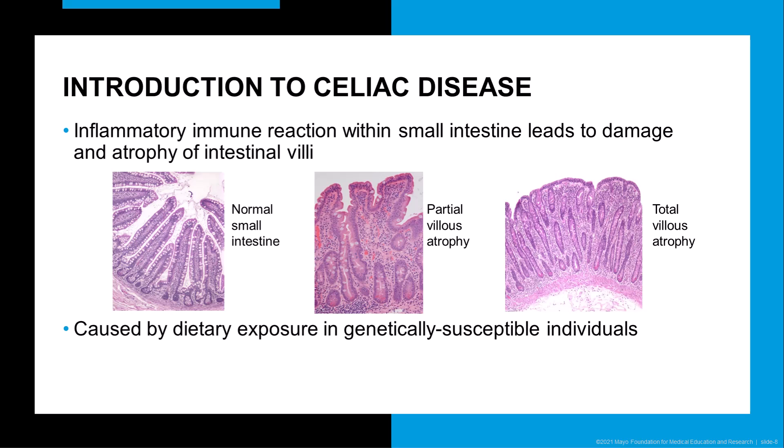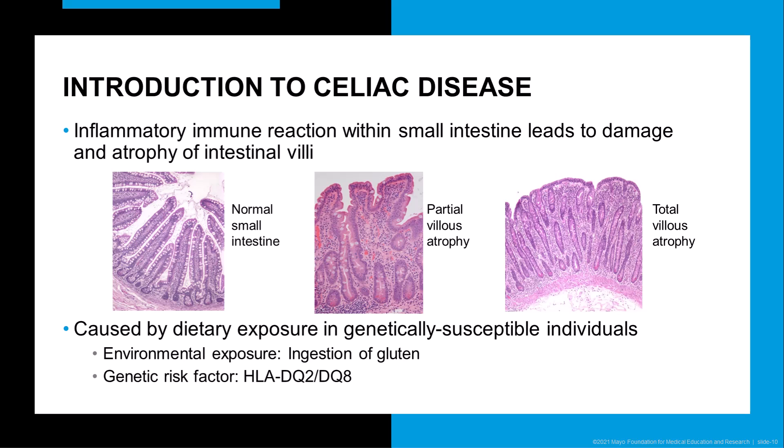For celiac disease to develop, an individual must have both the genetic susceptibility and the proper environmental exposure. The environmental exposure is ingestion of gluten, a cereal grain protein from wheat, barley, and rye. The genetic components of celiac disease are specific alleles of the human leukocyte antigen complex, namely HLA-DQ2 and HLA-DQ8.